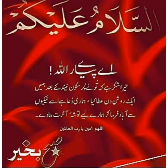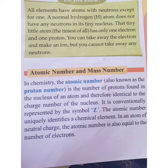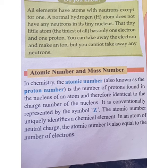From the chapter 'Atom and Its Structure,' we studied atomic number and mass number in detail. The number of protons present in the nucleus of an atom is called the atomic number of that atom, and it is represented by capital Z.